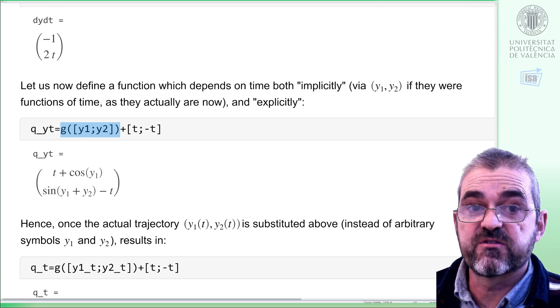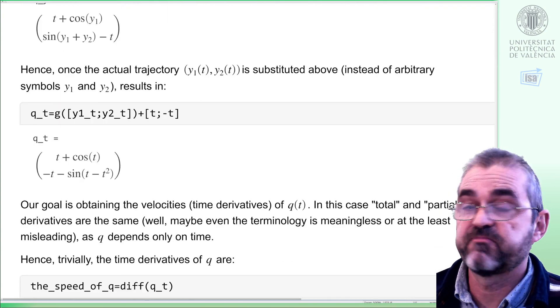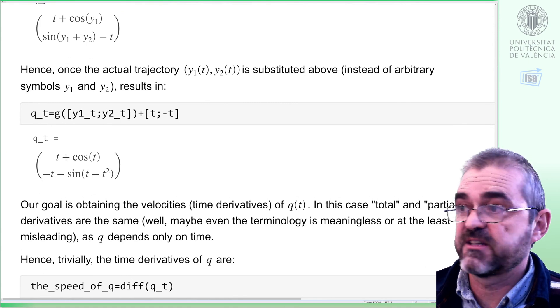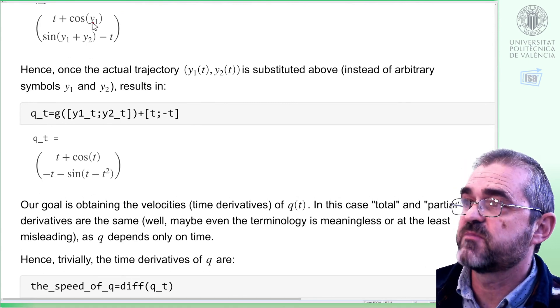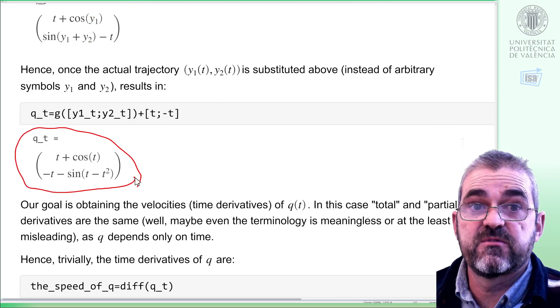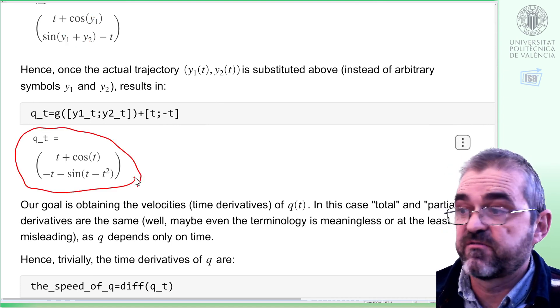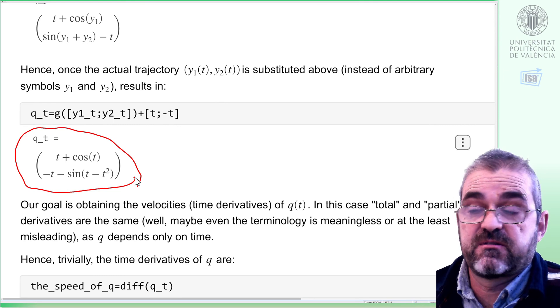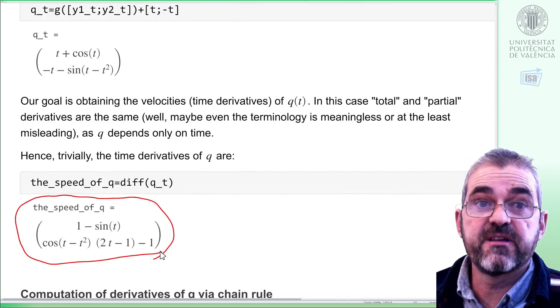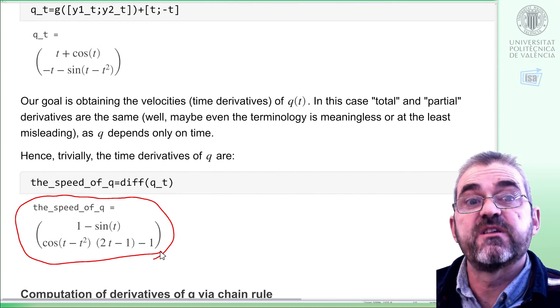First, the obvious way of doing this, if we know the trajectories beforehand, I just substitute in here the actual expressions and I get a function of time, so the speed of components 1 and 2 is just taking the time derivative, so I will store this as the speed of q.